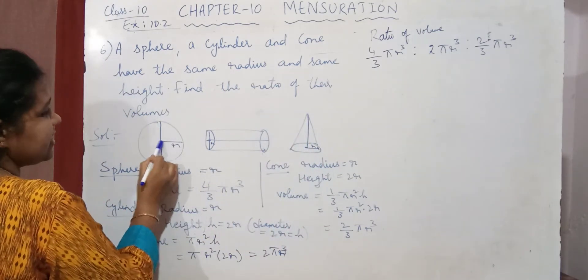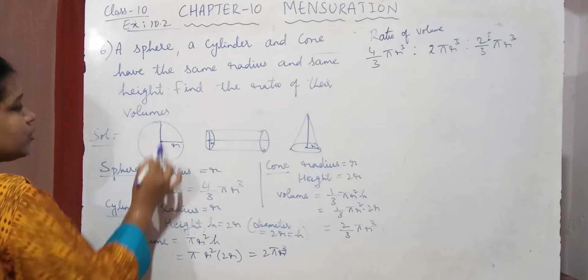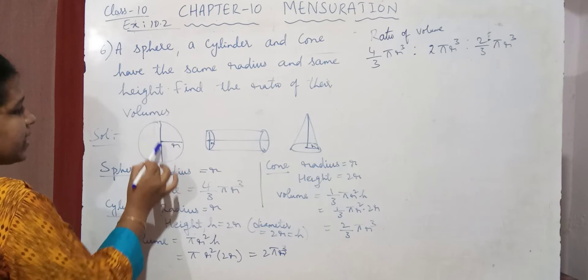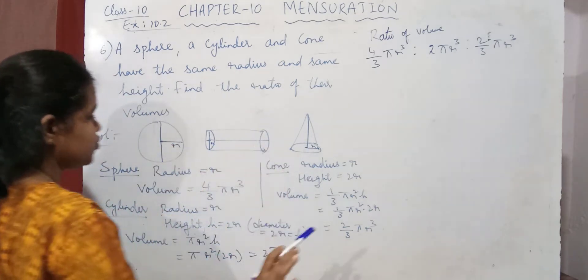So if you observe, if you take the radius as r, what is the height of the sphere? Height is nothing but 2 times radius. Okay, so here the height is 2 times radius. If the height is 2r, here also it is 2r, here also it is 2r.